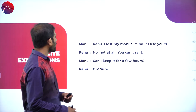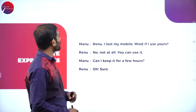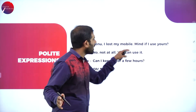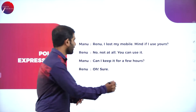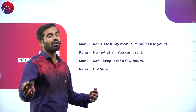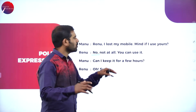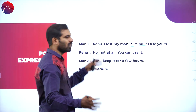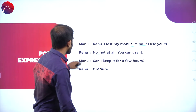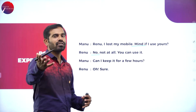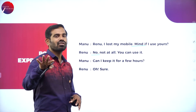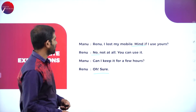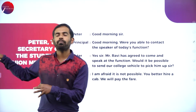Next conversation — Manu and Renu. Polite expressions: Manu says, 'I lost my mobile. Mind if I use yours?' Somebody has lost their mobile and is politely asking, 'Mind if I use yours?' Renu says, 'No, not at all' — here 'no' is not rejecting the offer; it means 'not at all, you can use it.' So Renu is very polite and says, 'Of course you can use it.' Manu then asks, 'Can I keep it for a few hours?' and Renu says, 'Oh sure, no problem at all, I understand your problem.'